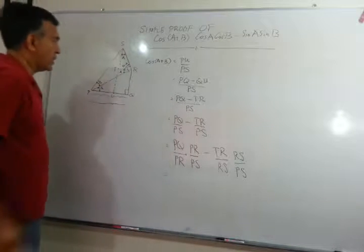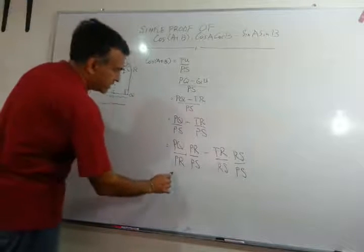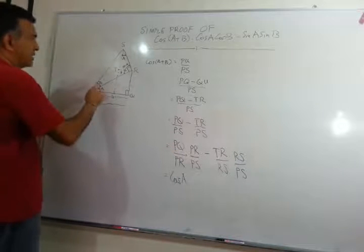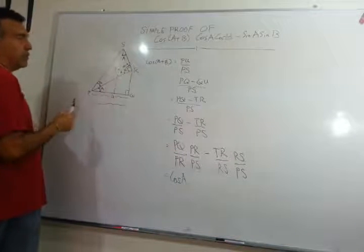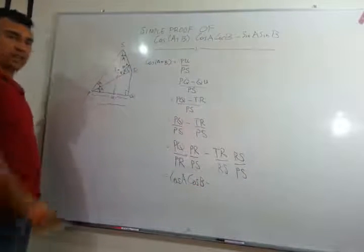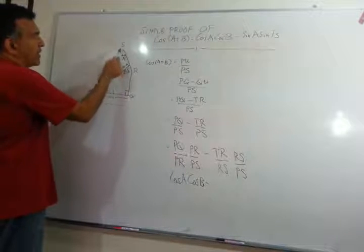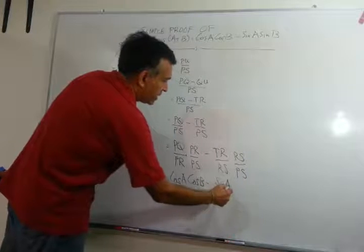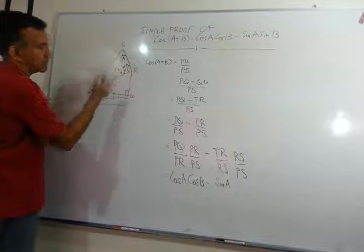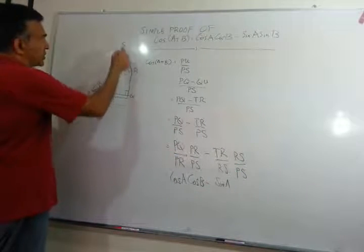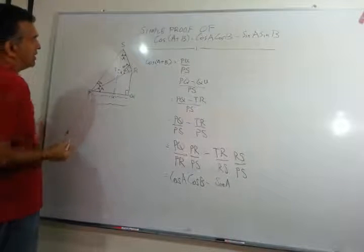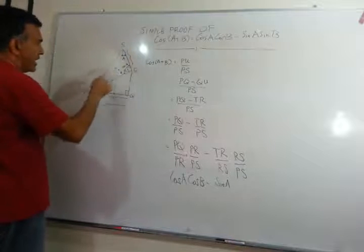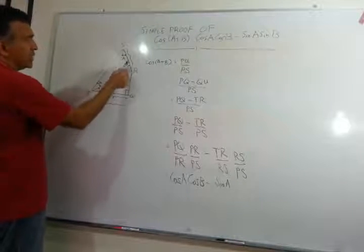Now we're writing our answers. PQ over PR, you can see, is cos A. PR over PS from this triangle, adjacent over your hypotenuse, is cos B. Good. TR over RS will be sin A, which is your opposite over your hypotenuse. And then you have RS over PS, which is sin B. RS is here and PS is here, so that will be sin B, opposite over your hypotenuse.